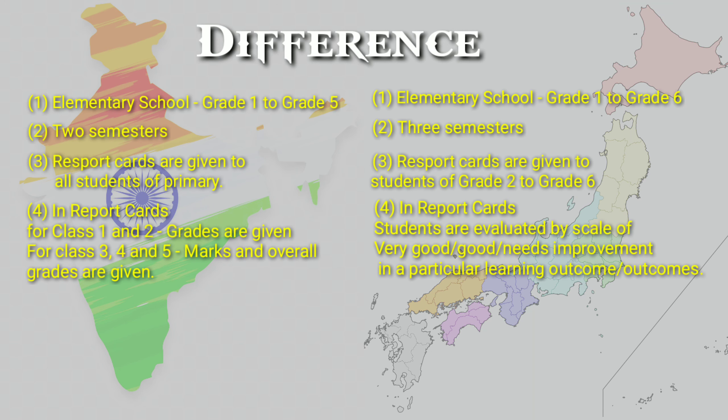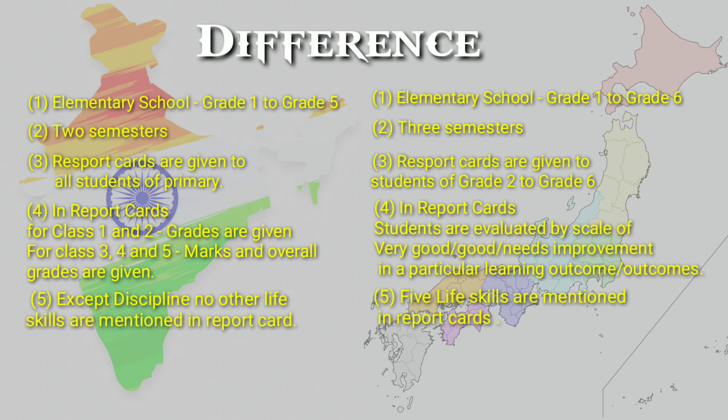Regarding report cards: in Kendra Vidyalai, students in Class 1 and 2 receive grades, while students in Classes 3, 4 and 5 receive both marks and overall grades. Whereas in Kogane Elementary School, students are evaluated using a scale of Very Good, Good or Needs Improvement for each learning outcome. In Kendra Vidyalai, except for discipline, no other life skills are mentioned in the report card, whereas five life skills are mentioned in the report card of Kogane Elementary School.